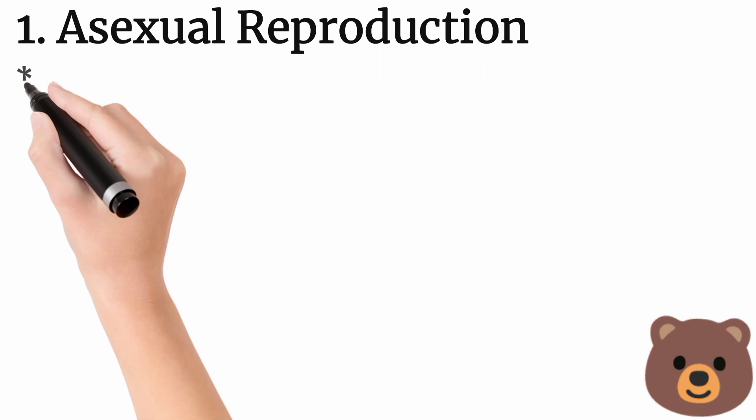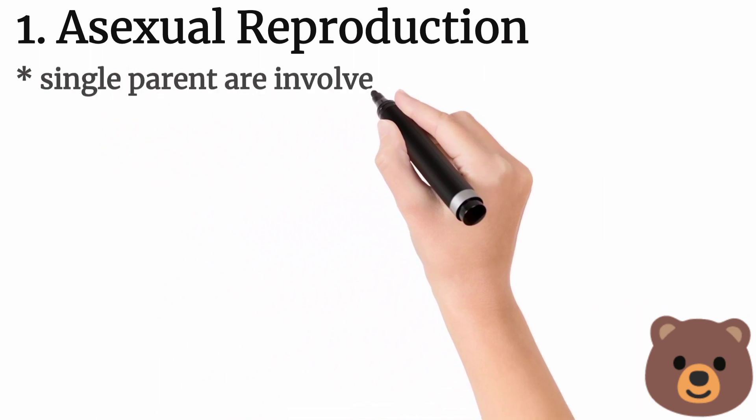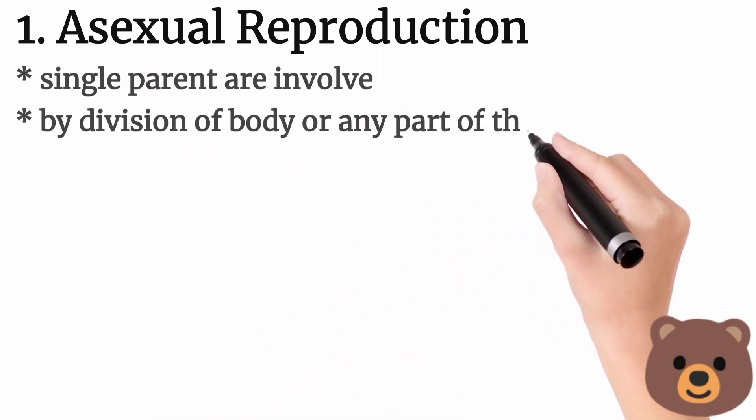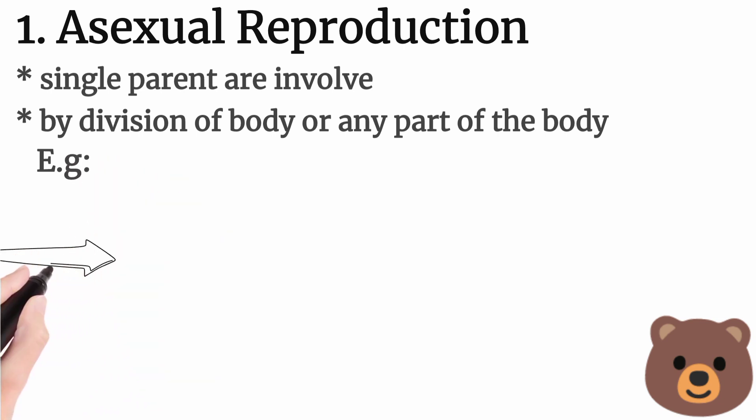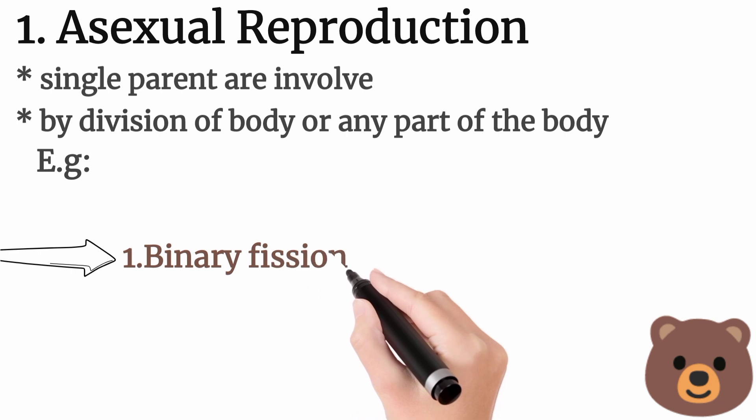Asexual reproduction means single parents are involved by the main of body or any part of the body. For example, binary fission.